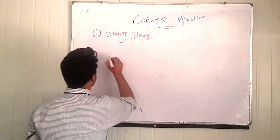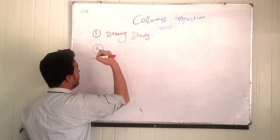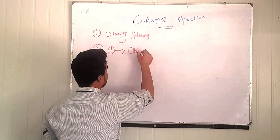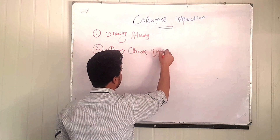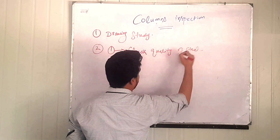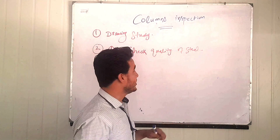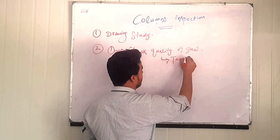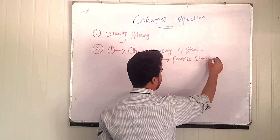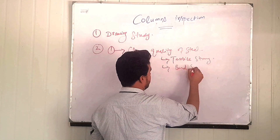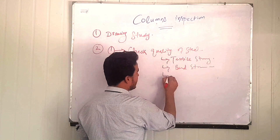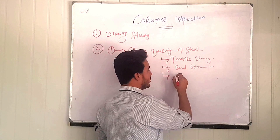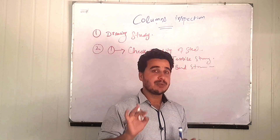The second point: once you reach the site, check the quality of steel. There are three things to check: first, the tensile strength report; second, the bend strength report; and third, the appearance of the steel. If the steel has a blackish color, there is some sort of impurity in that rebar.